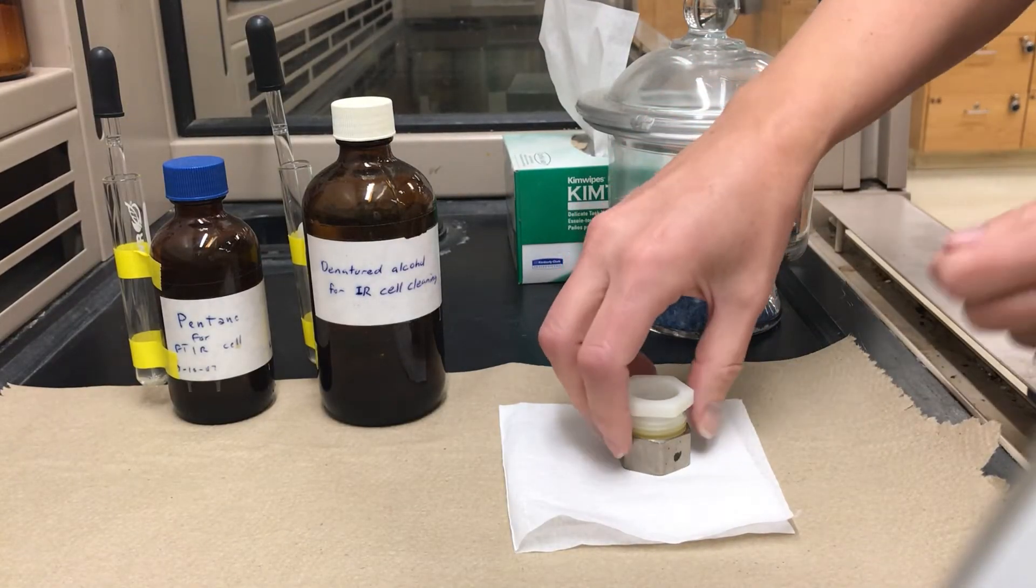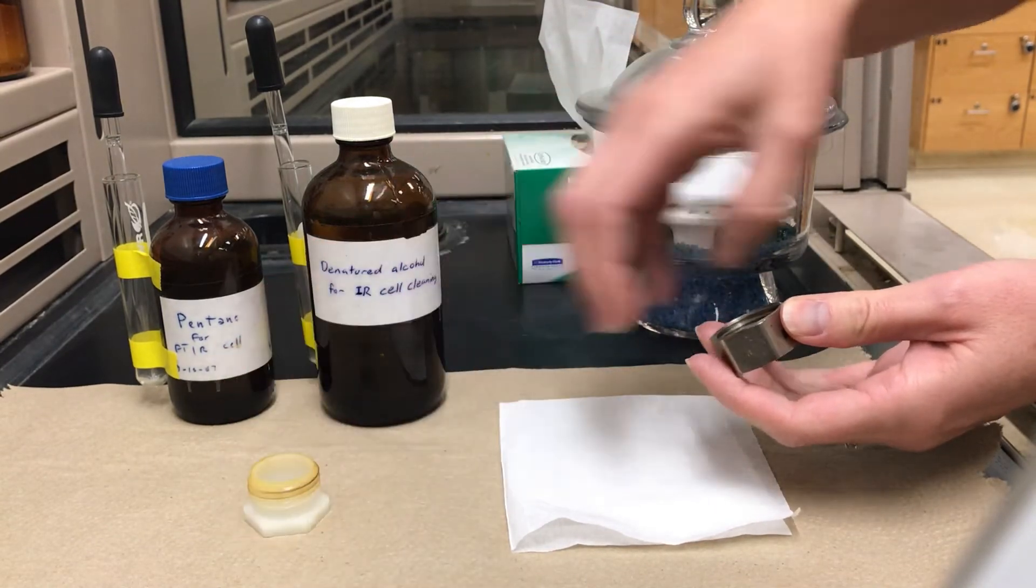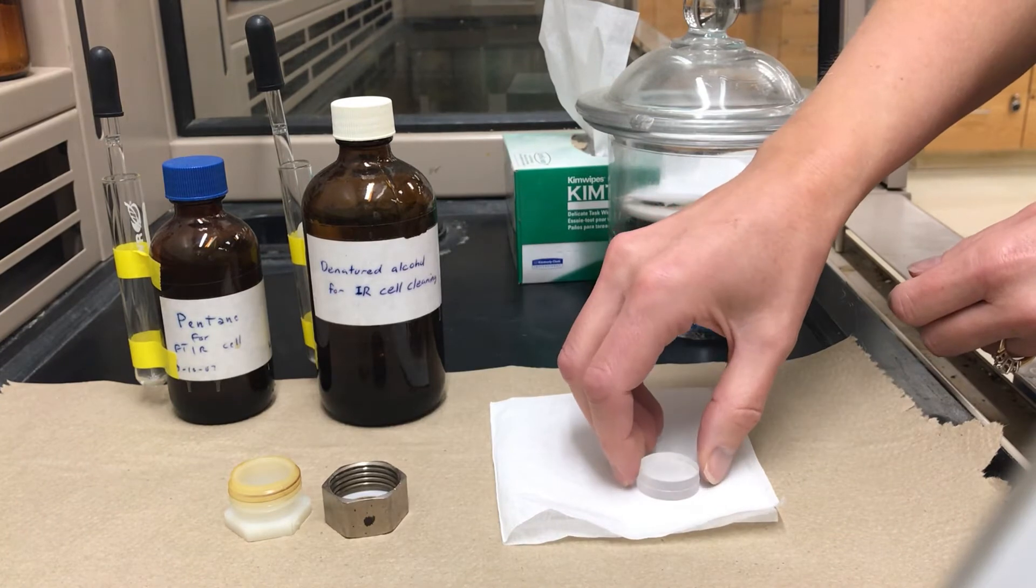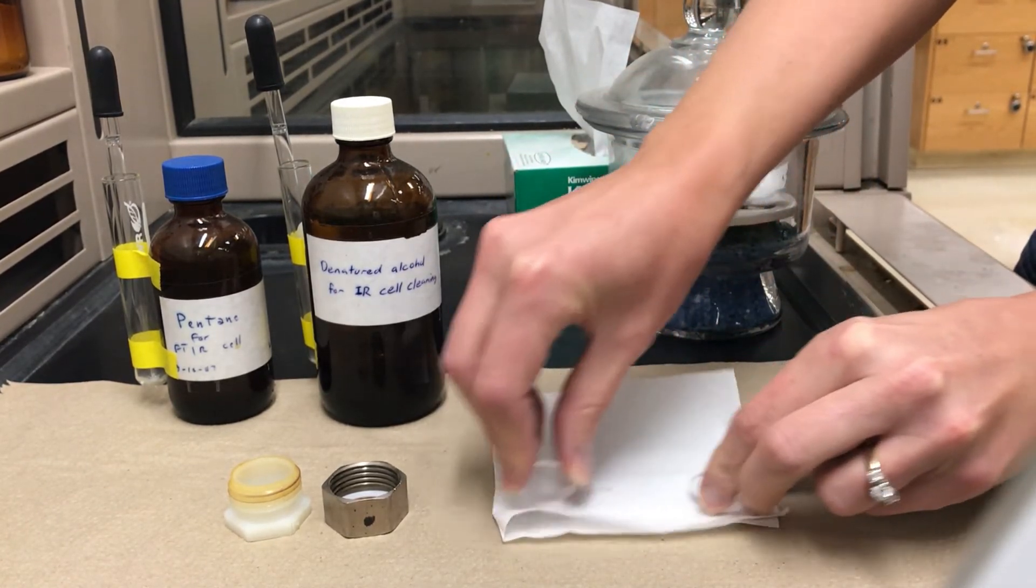When you're ready to clean the plates here's what you'll do. You'll first open up the holder and remove the plates. You can just pour them onto a kim wipe and then open up the sandwich and then take the dirty sides and wipe those onto the kim wipes.